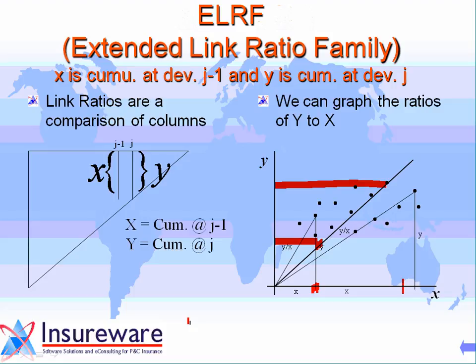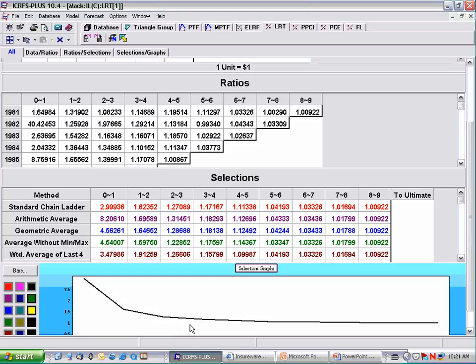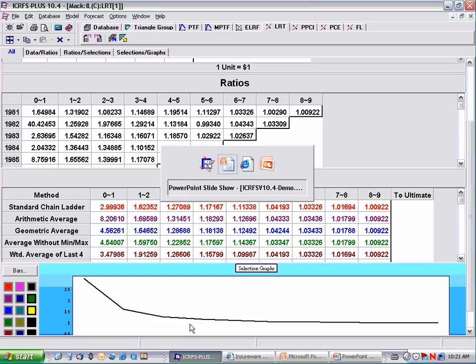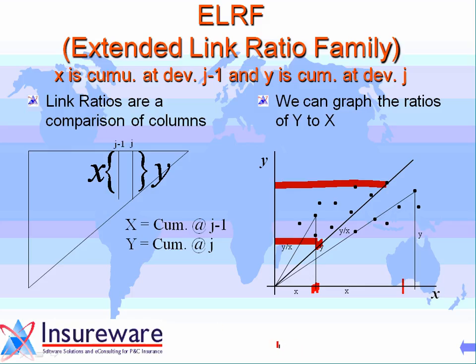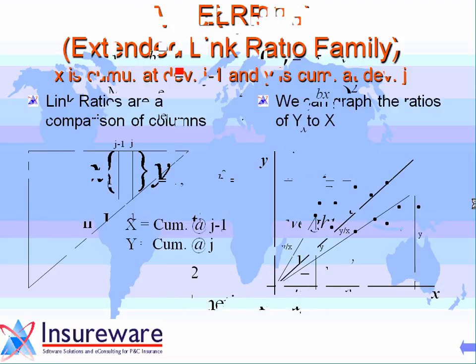The cumulative at the next period deviates from the average ratio line. The second assumption: given x, the variance of y around the line is proportional to x. So this variance is proportional to this x, and a larger x will produce a much larger variance.